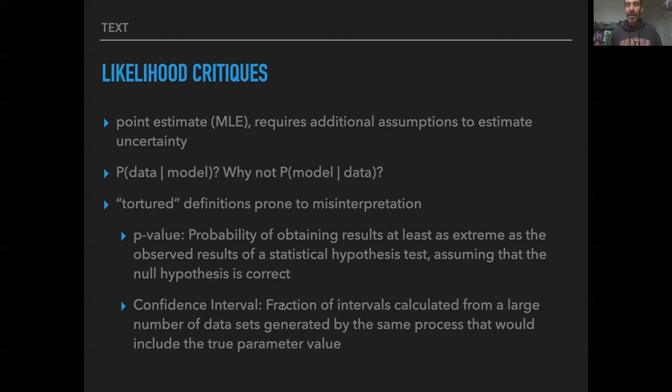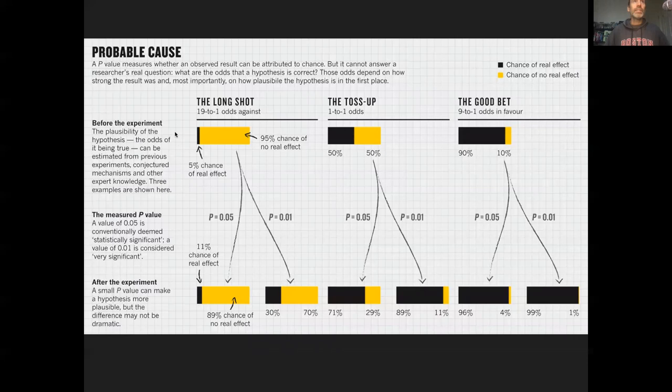So let's take a look at an example of how that can lead us astray. So imagine that we have three different experiments and they represent three different levels of plausibility for hypotheses. So let's say, before the experiment is carried out, we have our long shot hypothesis, there's 19 to one odds against that. So there's a 95% chance there's no real effect, 5% that it's real. Toss up, our prior information that's coming from previous experiments, conjecture mechanisms, other expert knowledge. Let's say based on all the knowledge up to date, we have a 50-50 chance that this thing is true. And let's say all the knowledge up to now says we're pretty sure this is true. Let's say the data to now says it's 90 to 10, 9 in 1 odds in favor.